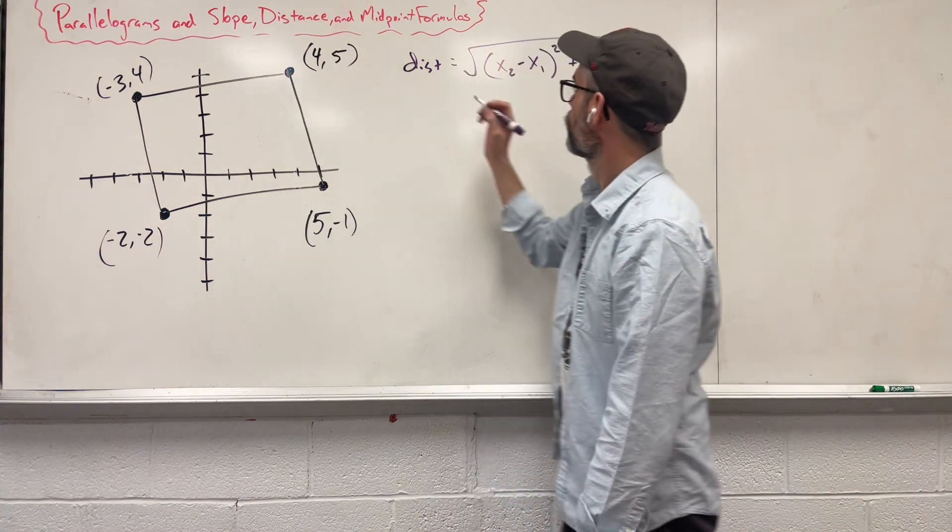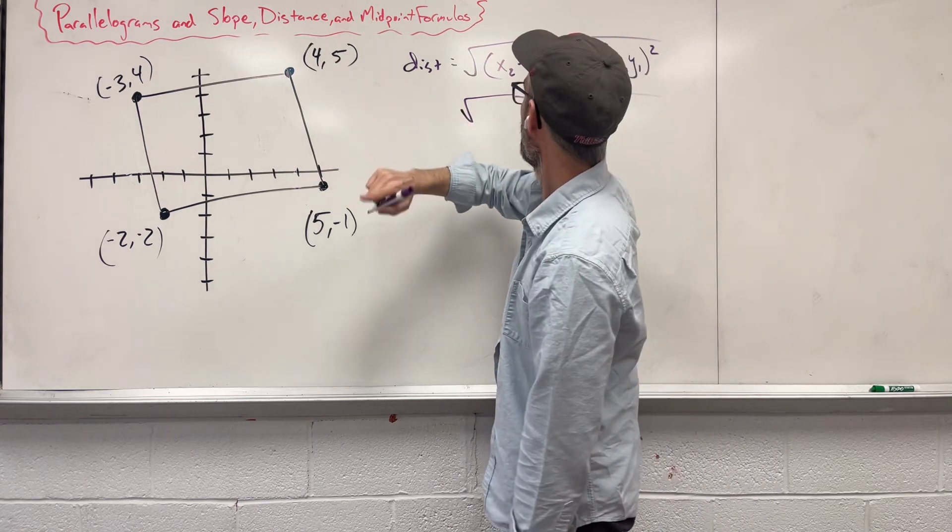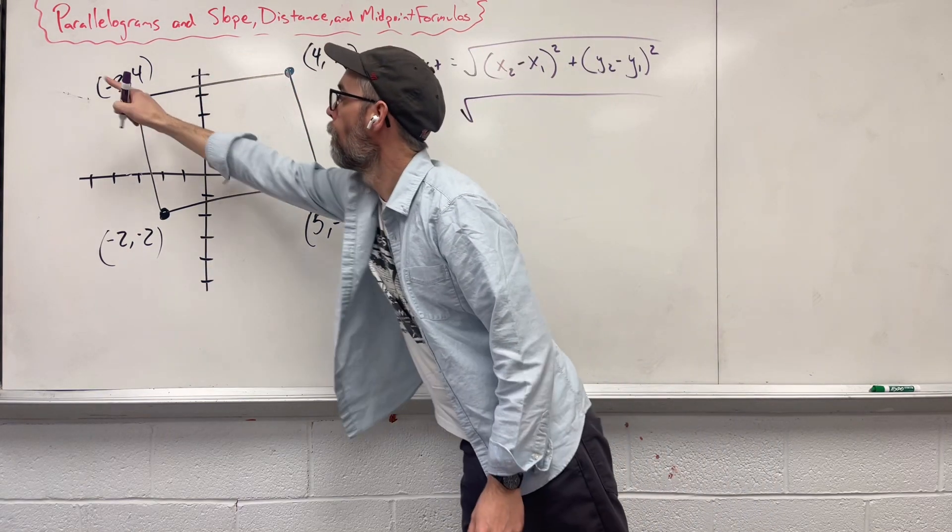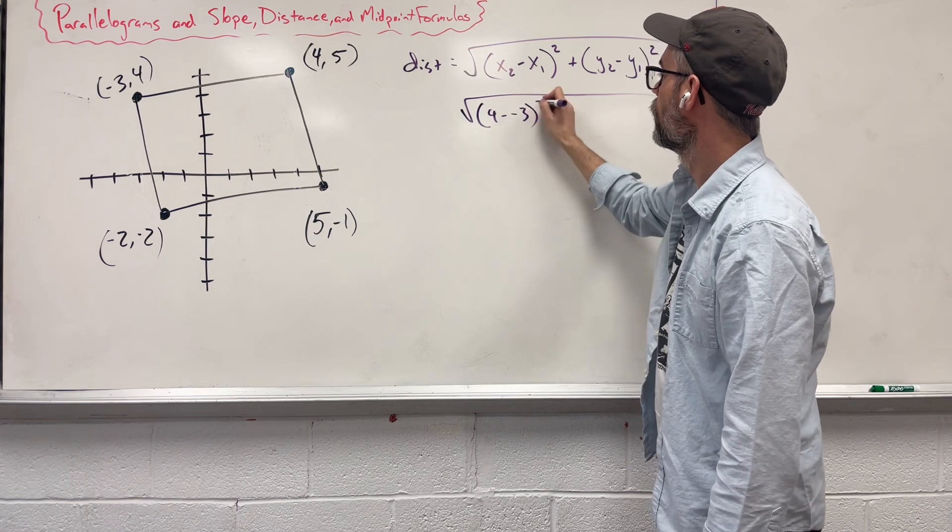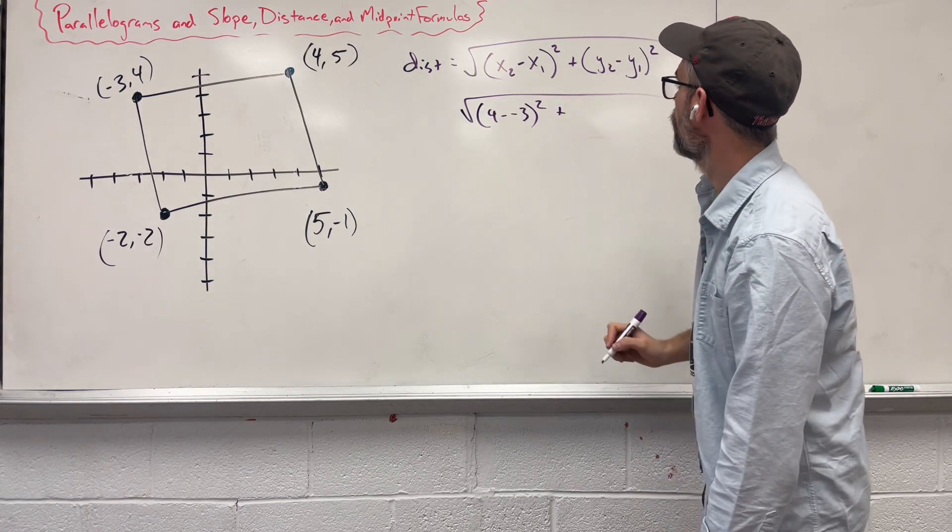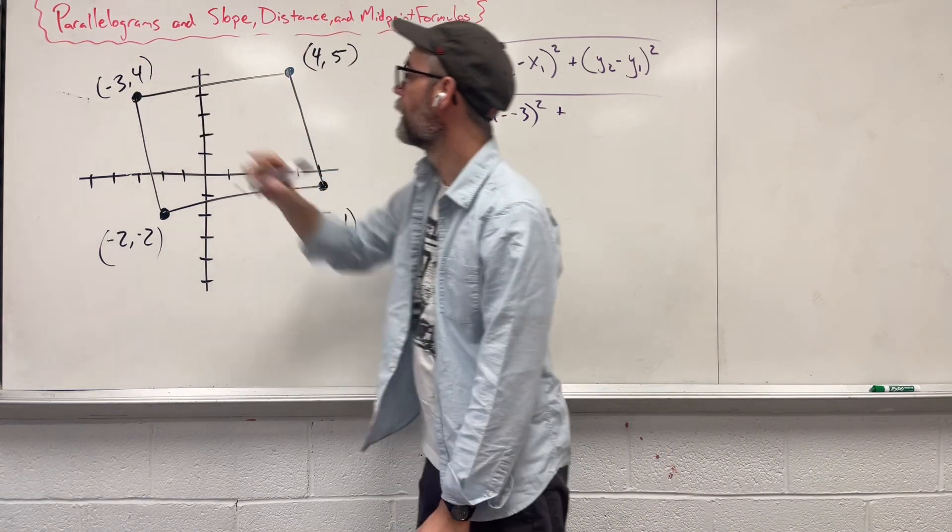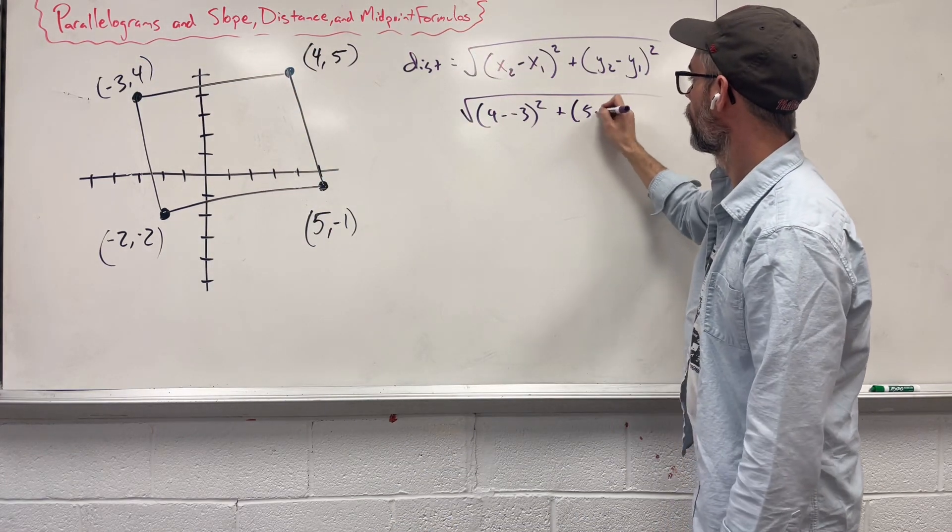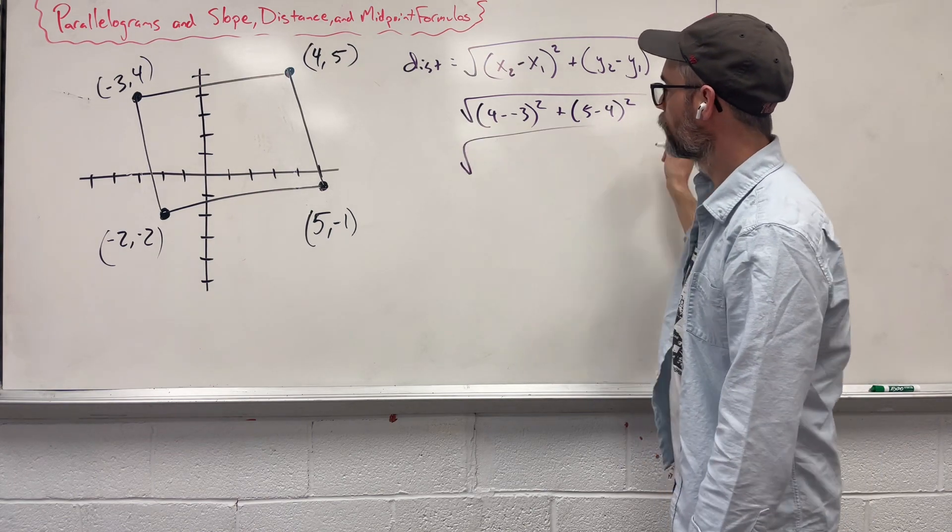So let's try some of this out. Let's start with our top line. Inside, we're going to say our x's, 4 minus negative 3, square it, plus our y's now, 5 minus 4, square it.